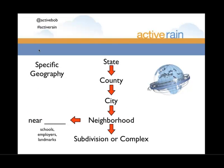Here's how you can get more specific with geography. State is the widest — 'homes for sale in Washington.' More specifically, 'homes for sale in King County.' Even more specific: 'homes for sale in Seattle.' Then maybe 'homes for sale in Green Lake, Seattle' — the neighborhood. Getting even more specific, you can focus on a specific subdivision or condo complex in your marketplace, which I talked about last week using as examples for best practices when writing a blog post to rank.